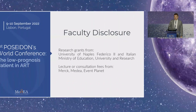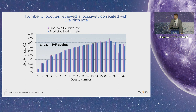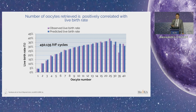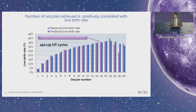Let's go straight to my faculty disclosure and start with the concept of hyper-response. As was clearly explained before, the number of eggs is a crucial thing in IVF. We already know that if we retrieve enough eggs, we can improve the chance to have a live birth at the end of the IVF cycle. This was clear since 10 years ago in a publication demonstrating that when talking about fresh cycles, we need probably 10 to 15 oocytes to get the highest chance of live birth.